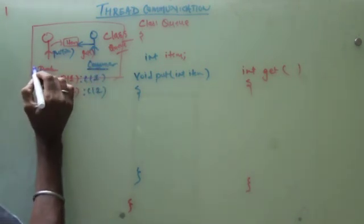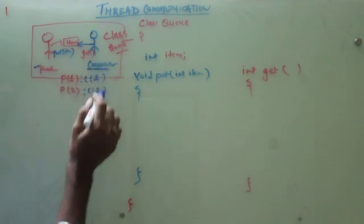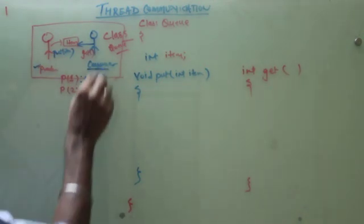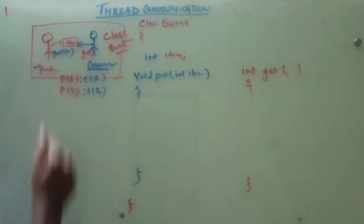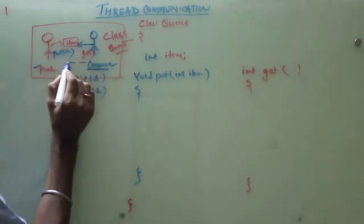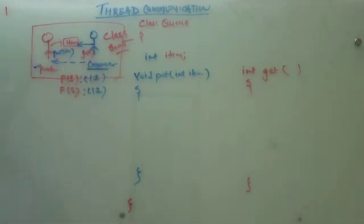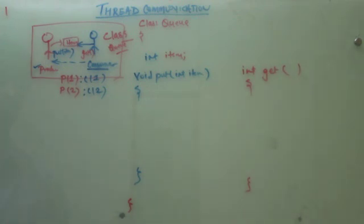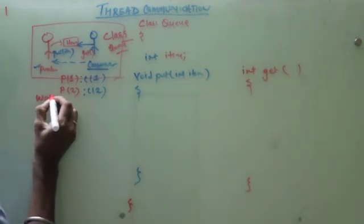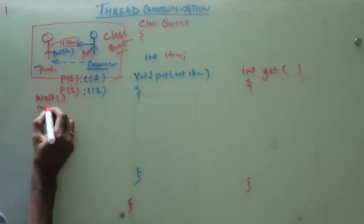And it has to go to wait state. Similarly, for the consumer when consumer get this item then it has to notify the producer. Then it has to go to wait state.